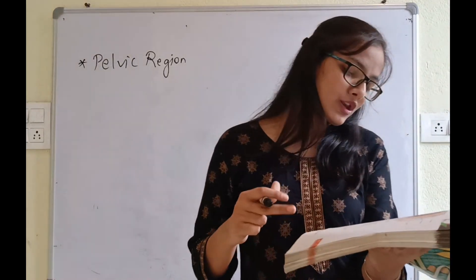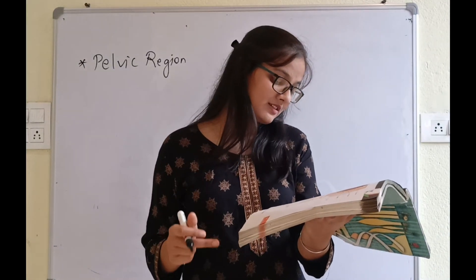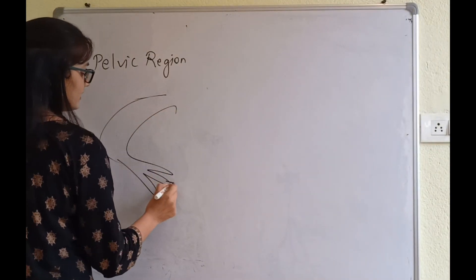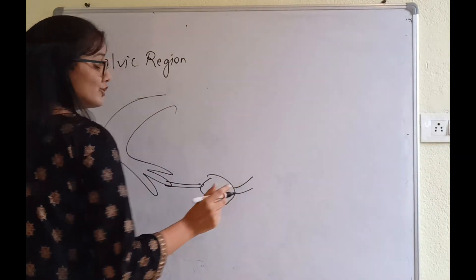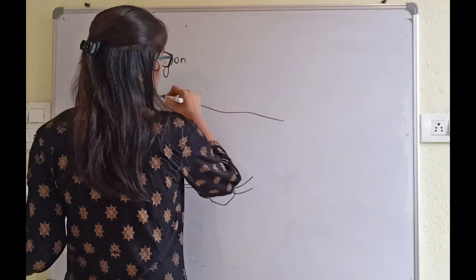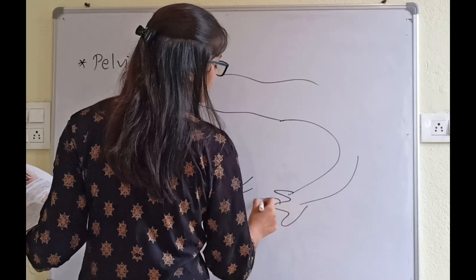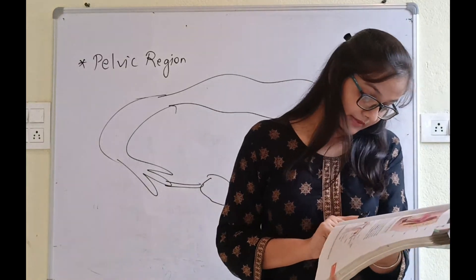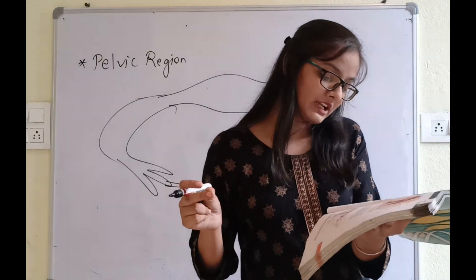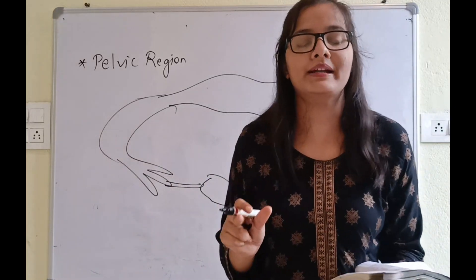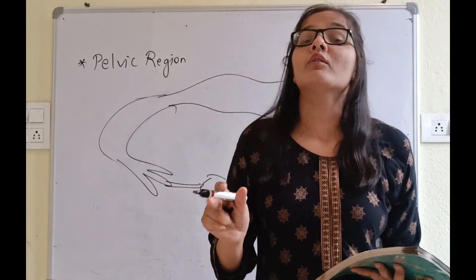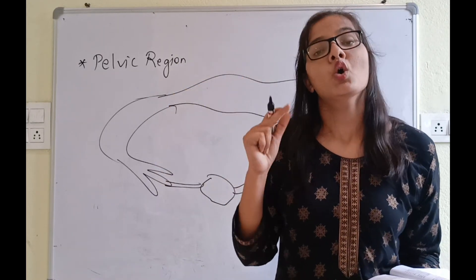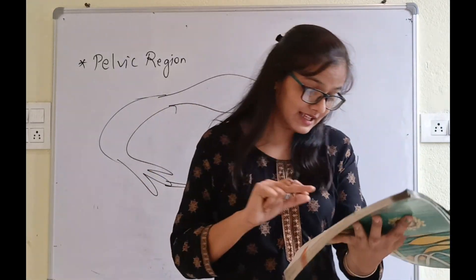Ovaries are located on one side of the lower abdomen. I have shown you the female reproductive system diagram - where are the ovaries located? Can you recall it? Here is the female reproductive system. Two ovaries are present, that is why it is written here. Each ovary is about 2-4 cm in length and is connected to the pelvic wall and uterus by a ligament.